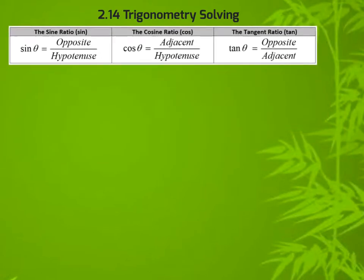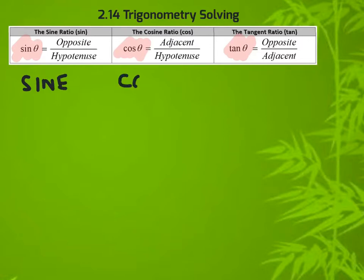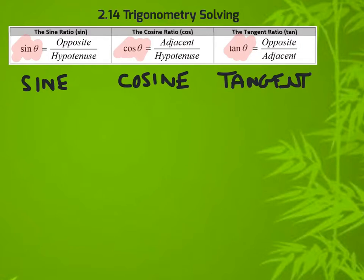The three ratios found in trigonometry are essential to memorize: sine, cosine, and tangent. You'll notice that those have been written in shorter form. The official writing is, of course, sine, cosine, and tangent. On a calculator or when we write them in formula setup, we just write sine without the e, cosine without the ending, and tangent without its ending.